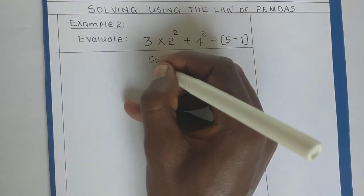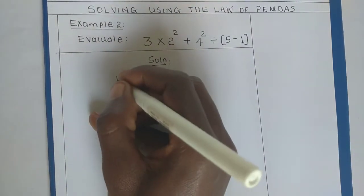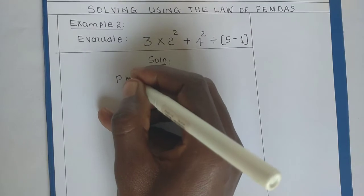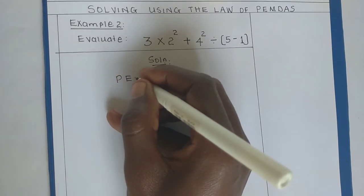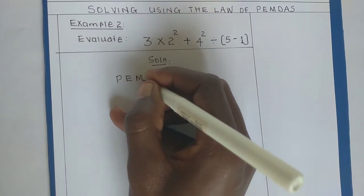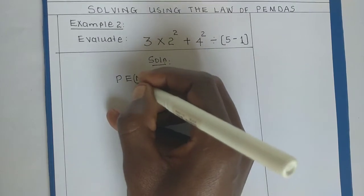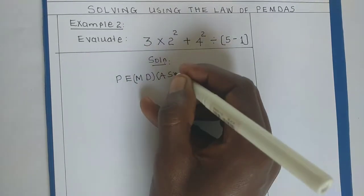Solution. As we look at this, we know that PEMDAS is for parenthesis, exponential, multiplication, division, addition, and then subtraction.